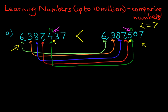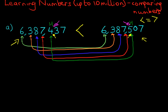So that's how we work it out. We start with the digit on the left and gradually move to the digit on the right if they are the same. We're going to do one more example just to make sure that we fully understand this.